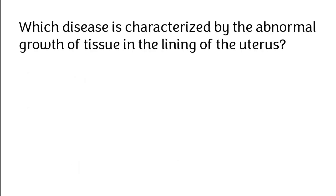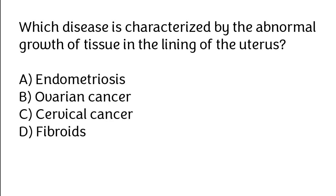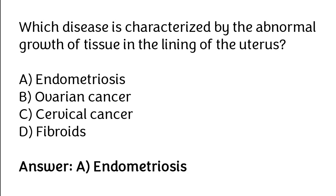Which disease is characterized by the abnormal growth of tissue in the lining of the uterus? Endometriosis, ovarian cancer, cervical cancer, fibroids. The correct answer is option A: Endometriosis.